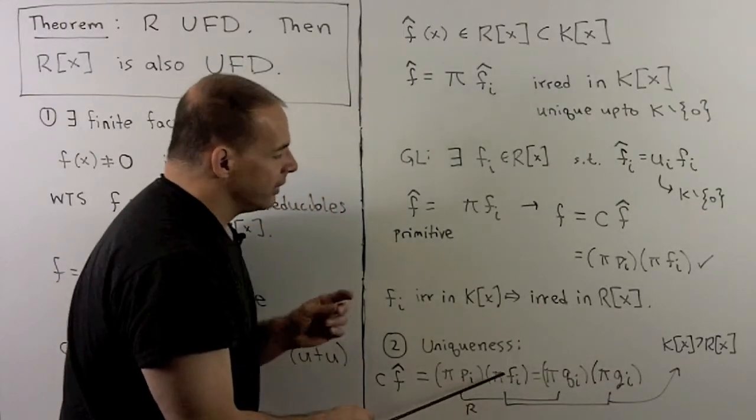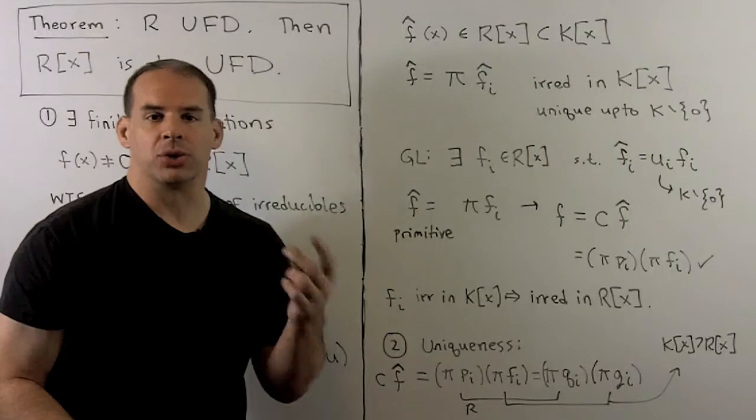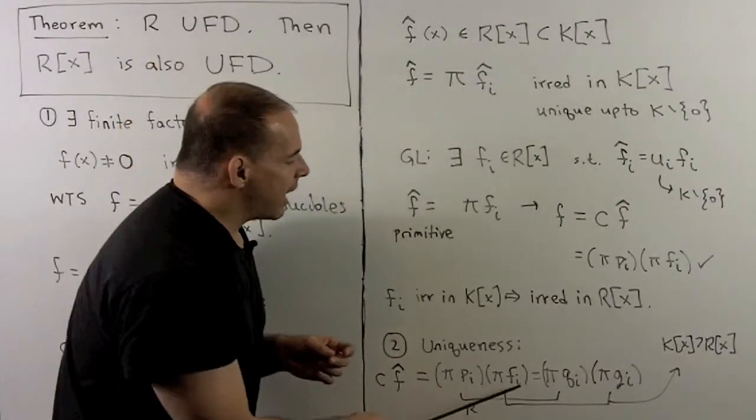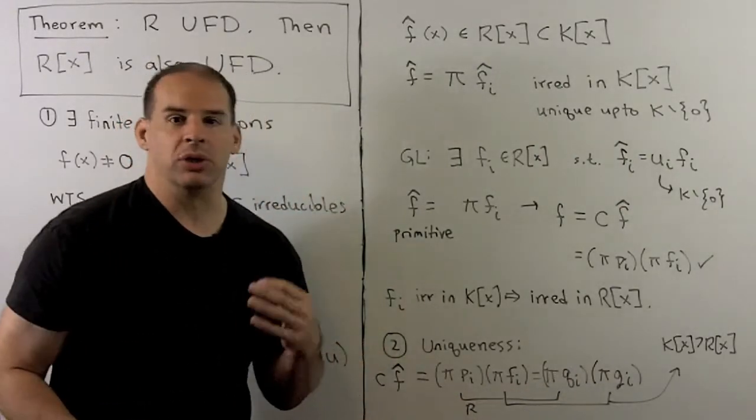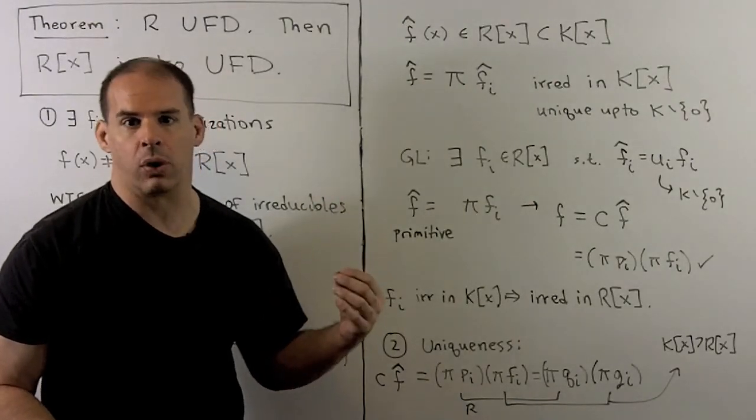Likewise, for the primitives, we're going to have these equal to these in K adjoin x, which is also a UFD. So this factorization here is also unique up to a unit, and then we put everything together. We have that uniqueness up to a unit that we're looking for.